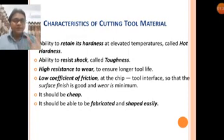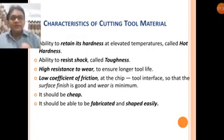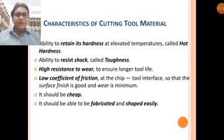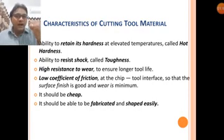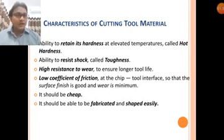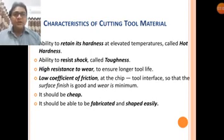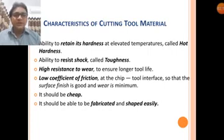During the metal removal process, there is friction between the tool and material, so temperatures rise very high. The tool must retain its hardness at these elevated temperatures. If the tool loses its hardness, it affects its cutting ability — since the tool needs to be harder than the workpiece to cut it. So hot hardness is the most important property of a cutting tool material.